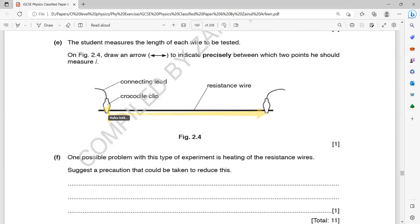Yeah. So you have to draw the two arrows. Yeah, that's right. So you have to draw two direction arrow. So you have to draw from here one arrow to other side. That's it. That is the length student should measure between the two crocodile clips.